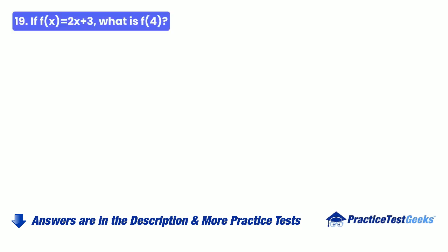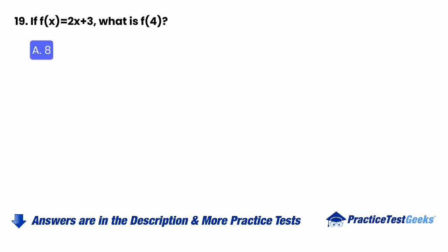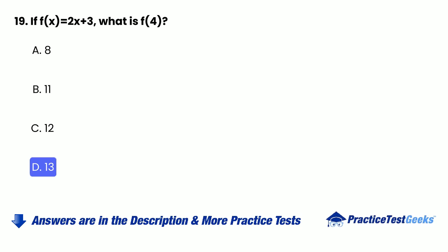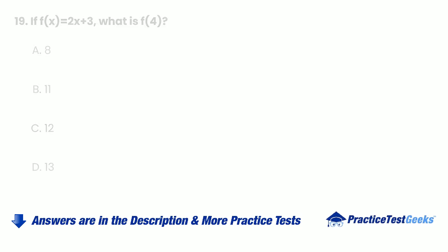Question 19: If f(x) = 2x + 3, what is f(4)? A. 8. B. 11. C. 12. D. 13.